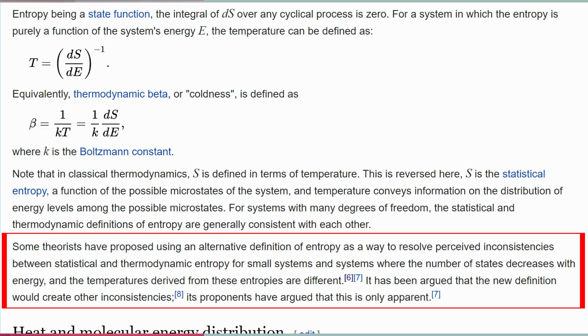You can, for example, see this controversy on Wikipedia by looking at the page for negative temperature where it states some theorists have proposed using an alternative definition of entropy as a way to resolve perceived inconsistencies. So in this video let's unpack this, explain what both sides are claiming, and at the end I will connect this to our usual discussion on the channel.